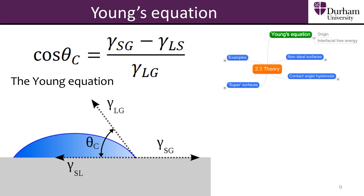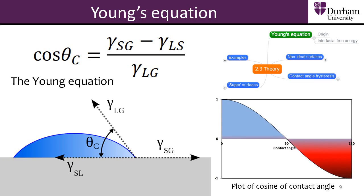The interfacial tension of the solid surface is key to determining whether a surface is hydrophilic or hydrophobic. Historically, a contact angle of 90 degrees has been the cutoff point between hydrophilic and hydrophobic surfaces. When the contact angle is less than 90 degrees, cosine theta is positive. From this, we can assert that the solid-gas surface free energy is high for hydrophilic surfaces. When the contact angle is greater than 90 degrees, cosine theta is negative, and hydrophobic surfaces have a low solid-gas surface free energy.